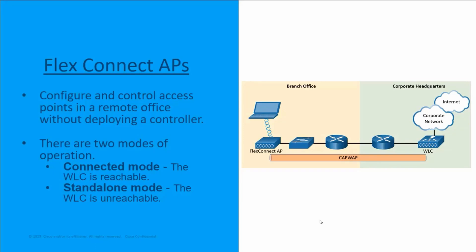In standalone mode, the wireless LAN controller is unreachable. The FlexConnect access point has lost or failed to establish the CAPWAP tunnel with the wireless LAN controller. In this mode, the FlexConnect access point can assume some of the wireless LAN controller functions, such as switching client data traffic locally in the network and performing client authentication.